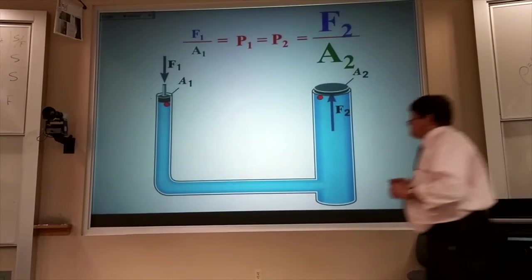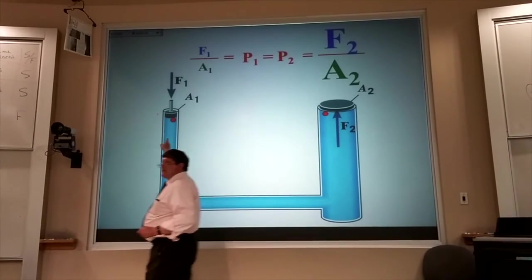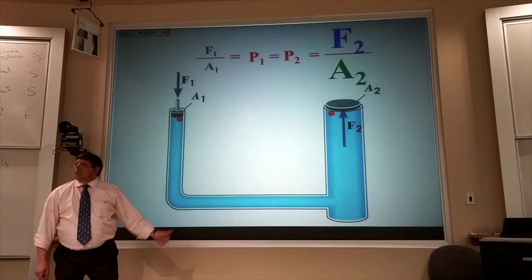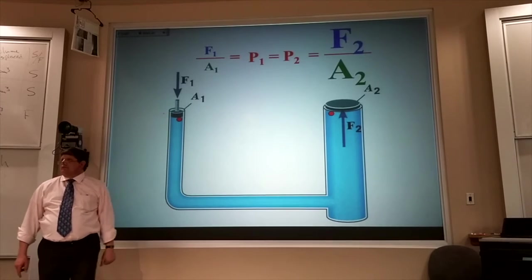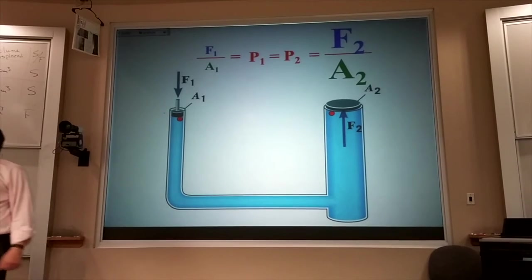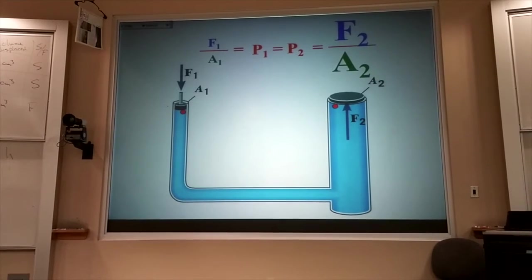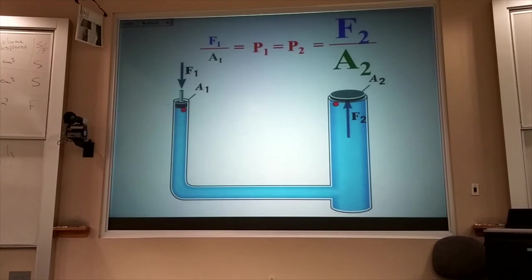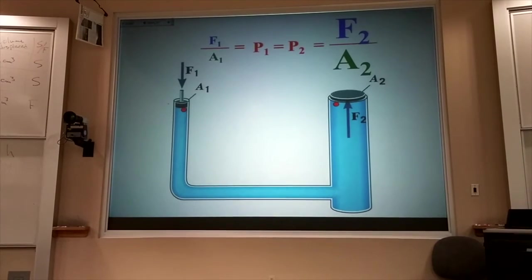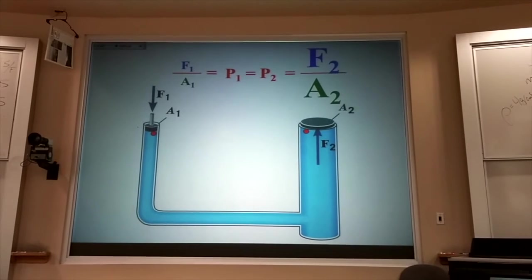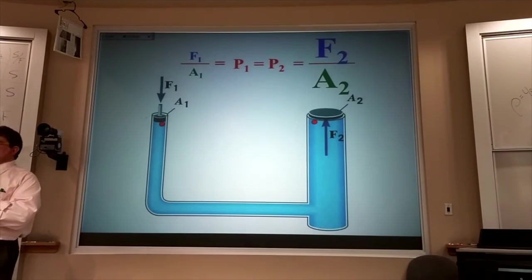Now, think about that. If I push with a hundred pounds down, that plunger there pushes up with a thousand pounds. I push with a hundred pounds, I get a thousand pounds. That sounds like free lunch. Whenever I get something for nothing, I get a little nervous. What's the catch here? Why is this not free lunch?